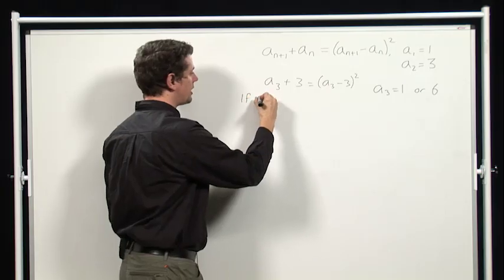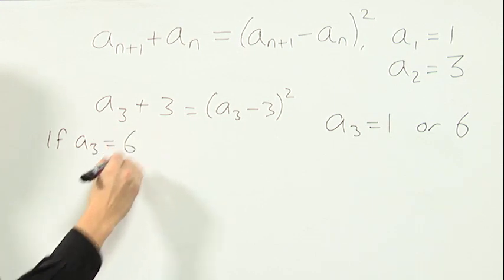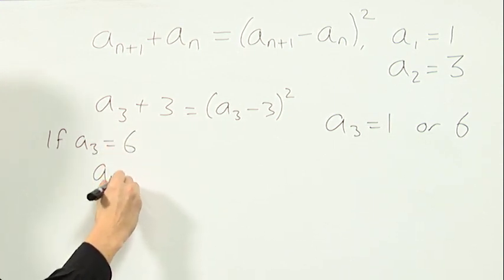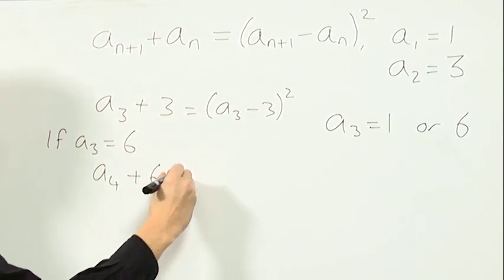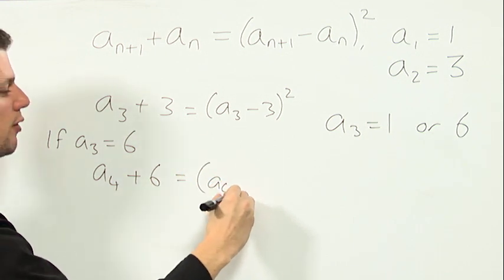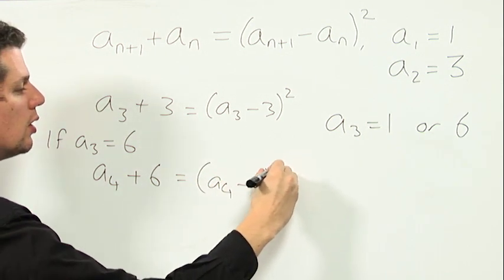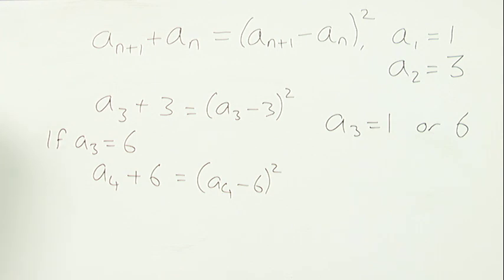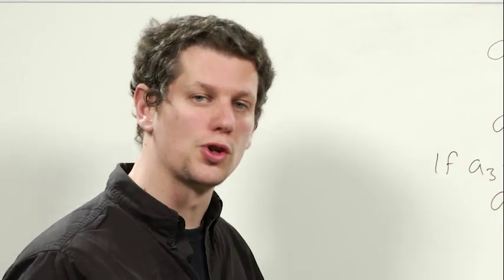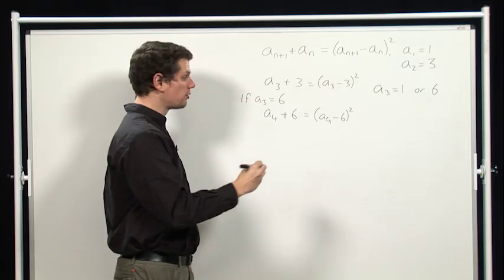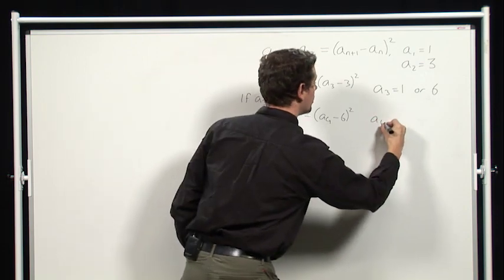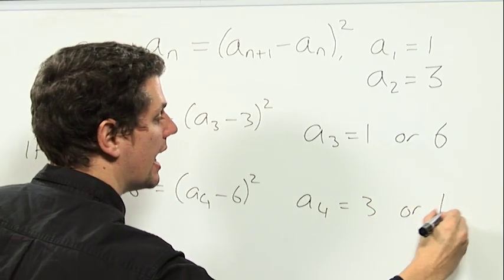So if a3 is equal to 6, then a4 plus 6 is equal to a4 minus 6 all squared. And again, that's a quadratic equation, and if we solve it, we find that a4 is either 3 or 10.